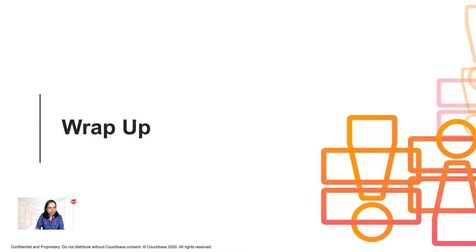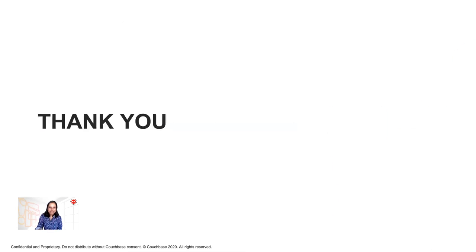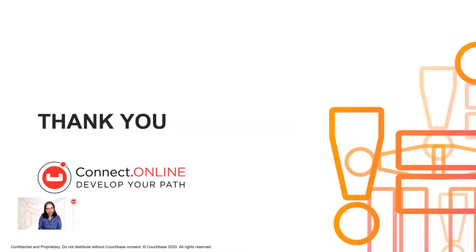That's basically a very high level overview of collections and scopes. There is a limited developer preview available in 6.5 so you can start experimenting today if you wish. Beta is coming soon with 7.0, planned for November 2020, so do look out for the announcement. We really look forward to receiving your feedback on beta. Thank you for attending my session today — hopefully you found it useful.